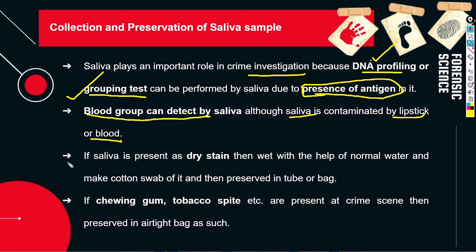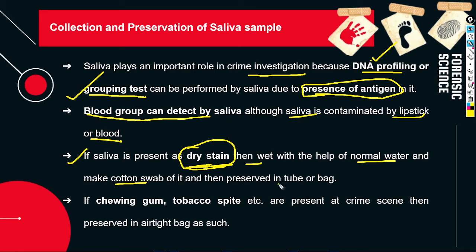If saliva has dry stains present, and you have detected that there are some stains here — saliva can be dry. So what do we first do? We will wet it. We will not pour water directly because that will dilute it. Instead, we will dip a cotton swab in distilled water and rub it on the stain. We will then preserve the cotton swab in a tube or bag.